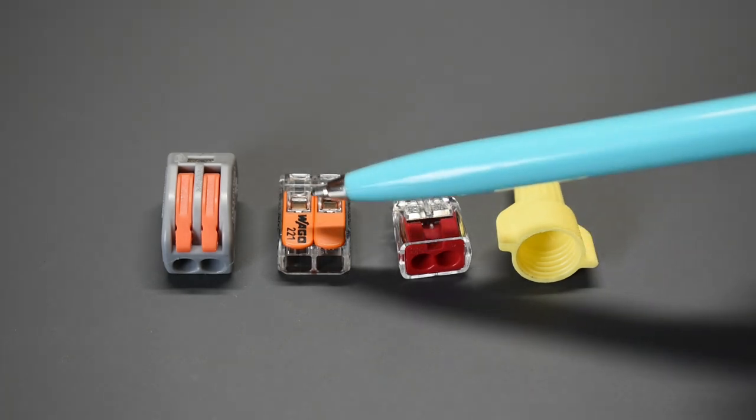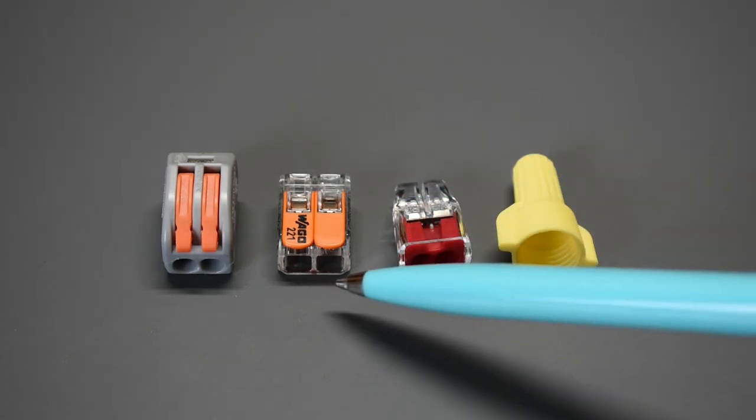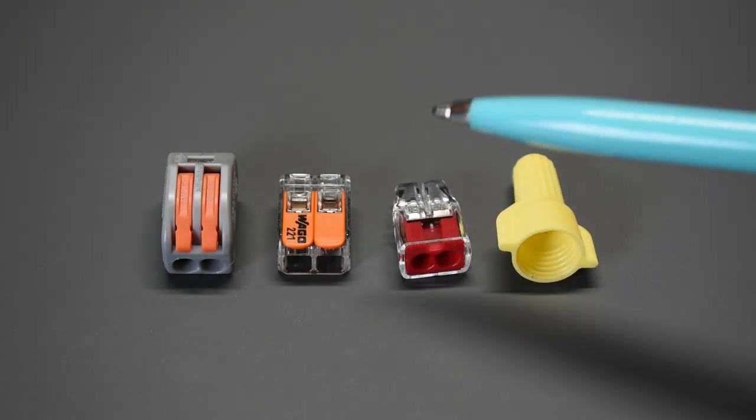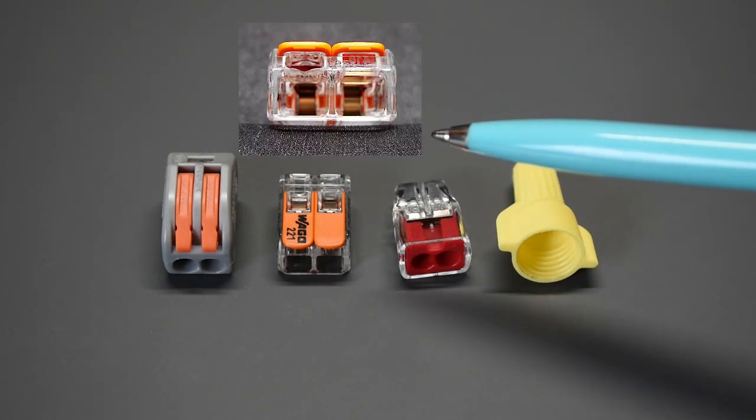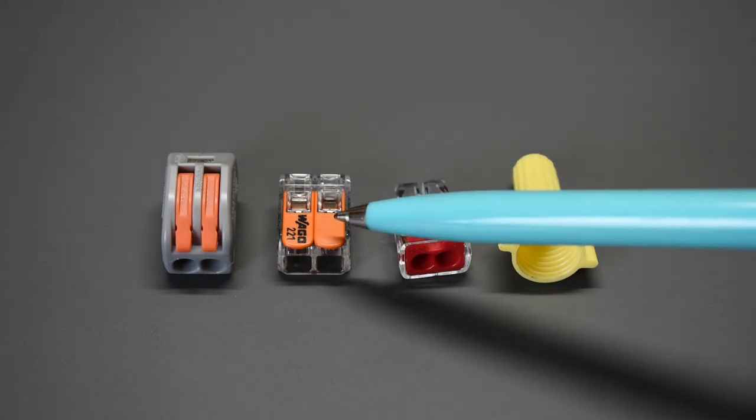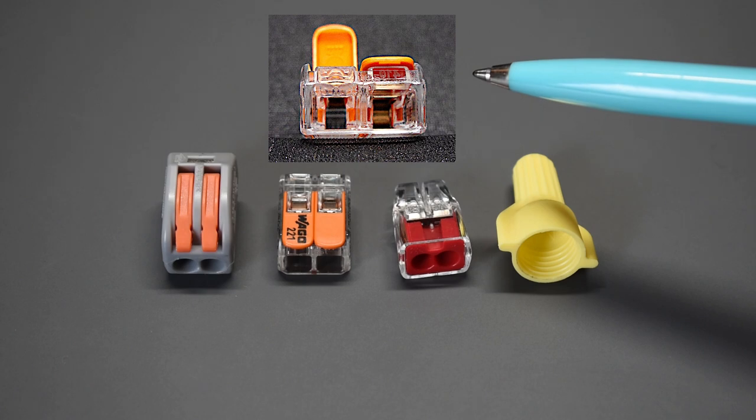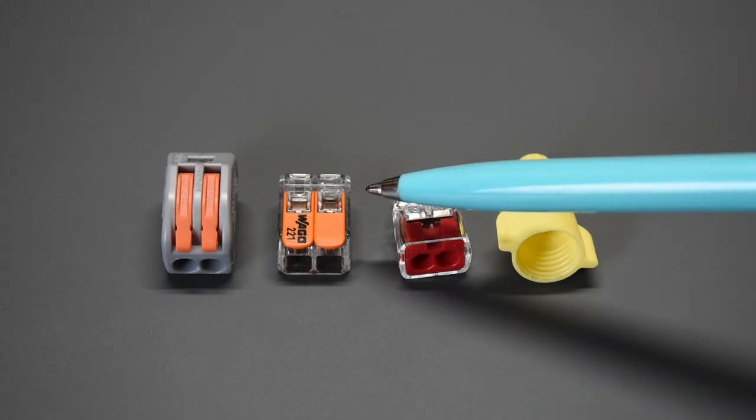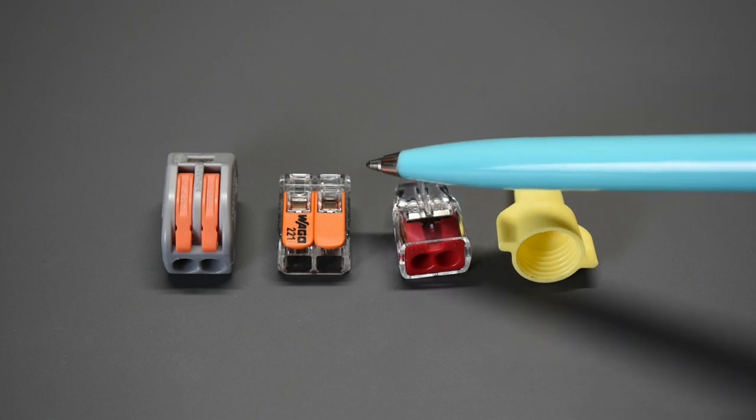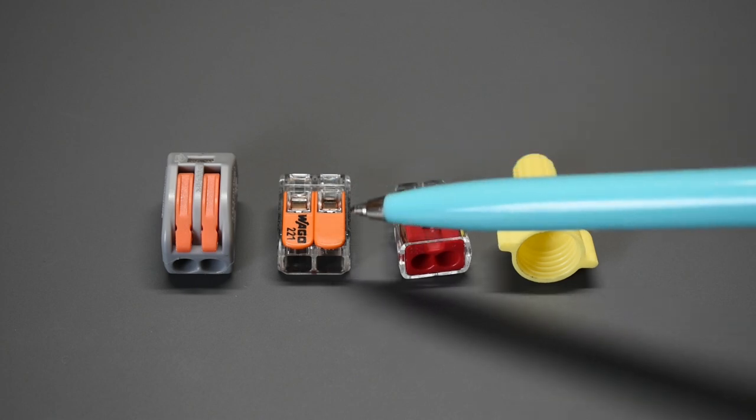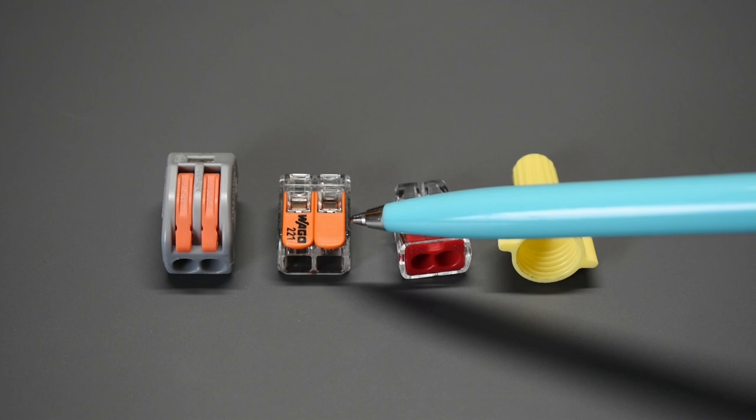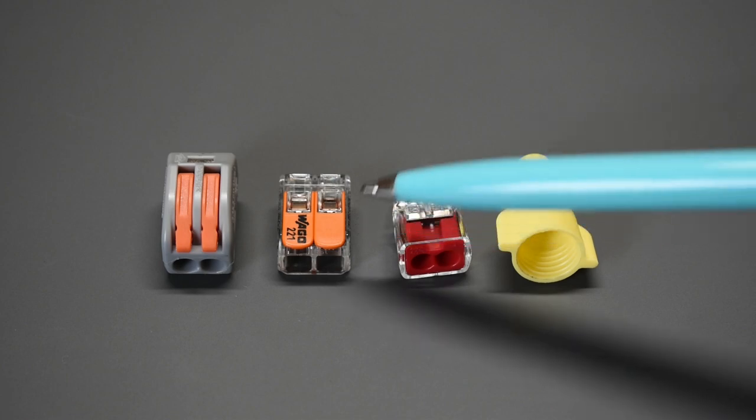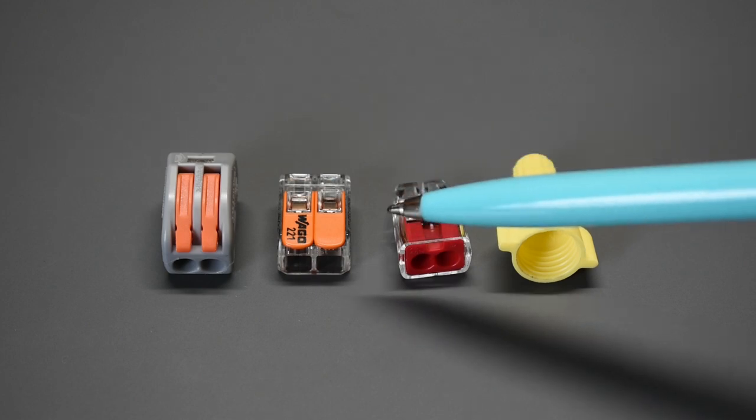Now with the Wago 221 connector, you can see there's two openings here. When you look inside, it looks like there's two doors that are down, almost like a brass color. And when you lift the lever up, it opens. And in this image, you can see one is open, one is closed. You would strip a half inch of insulation, 12 millimeters, and once it's all the way into the connector, you would take the lever and push it all the way down so it's flat. Once it's in the down position, it's locked, and all the tension on that metal inside the connector is now placed on the conductor.